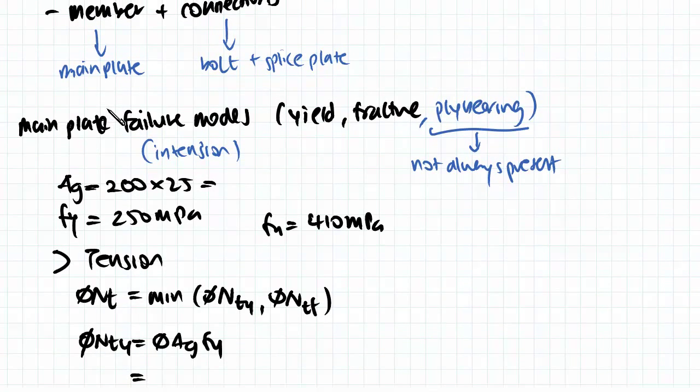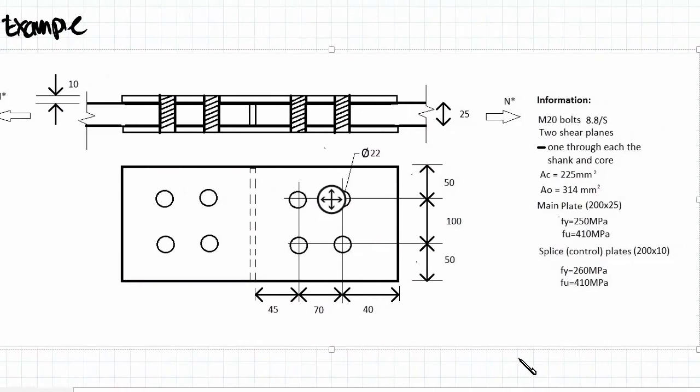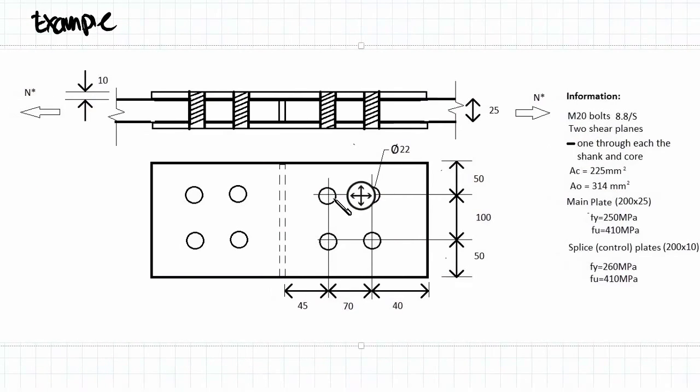The main plate has three failure modes when we're looking at it under tension. Usually there is yield and fracture of the plate. And in this example, there's also ply bearing. Just be careful with ply bearing, because usually it doesn't exist for simple questions. But in our case, because we're dealing with a plate that has a bolt that is very close to it.